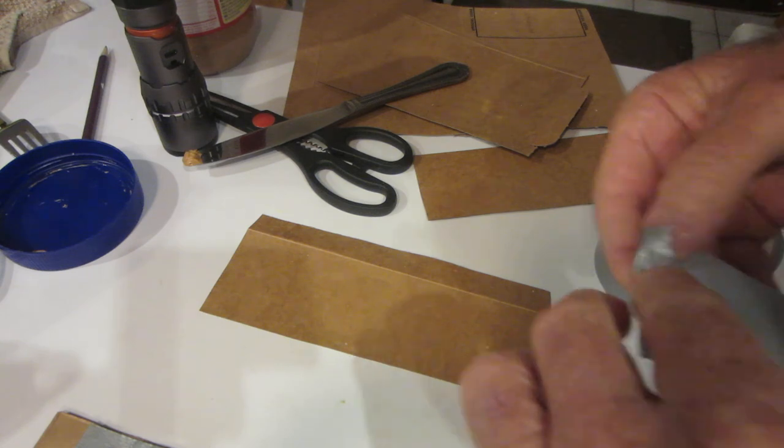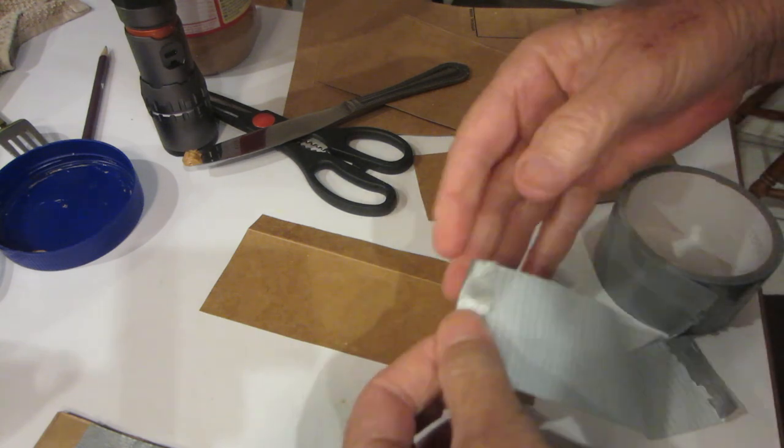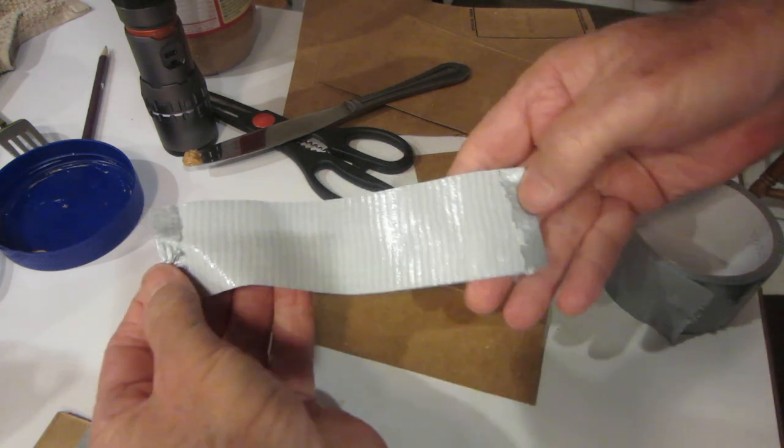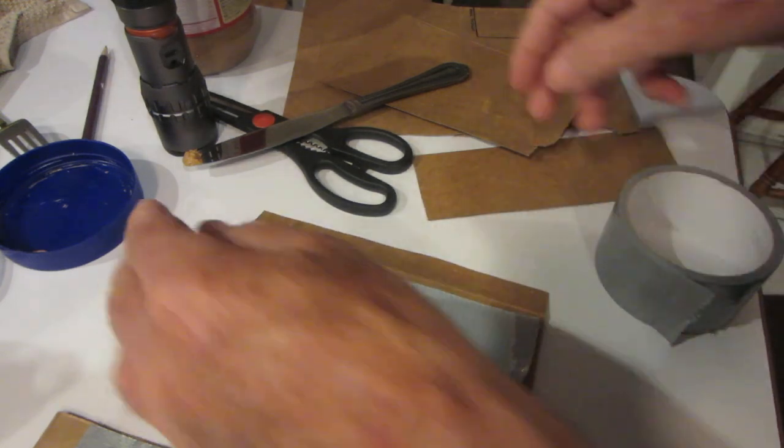And then fold the end back a little bit so it's easier to handle. So fold the end back right there. So you've got a piece of tape, both ends folded back.